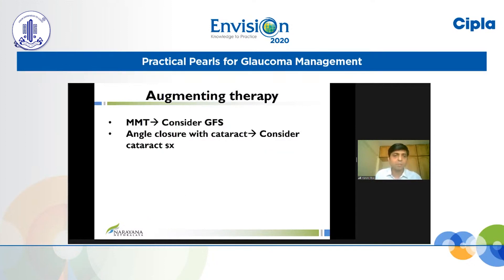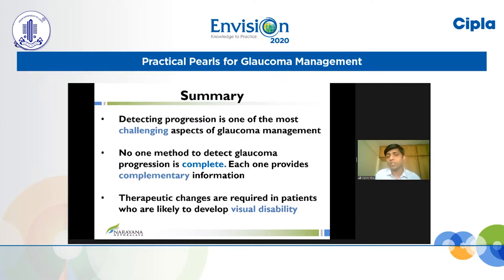If the patient is already on a PGA plus a beta blocker or alpha agonist, shift to a PGA with a carbonic anhydrase inhibitor, as that provides additional IOP reduction during nocturnal hours. If the patient is on maximum medical therapy, consider filtering surgery. If the patient has accompanying angle closure with cataract, consider cataract surgery. Tackling progression is a highly individualized topic. To summarize: detecting progression is one of the most challenging aspects of glaucoma management; no single method is complete; multiple tests may be needed; and therapeutic changes are required only for patients likely to develop visual disability.